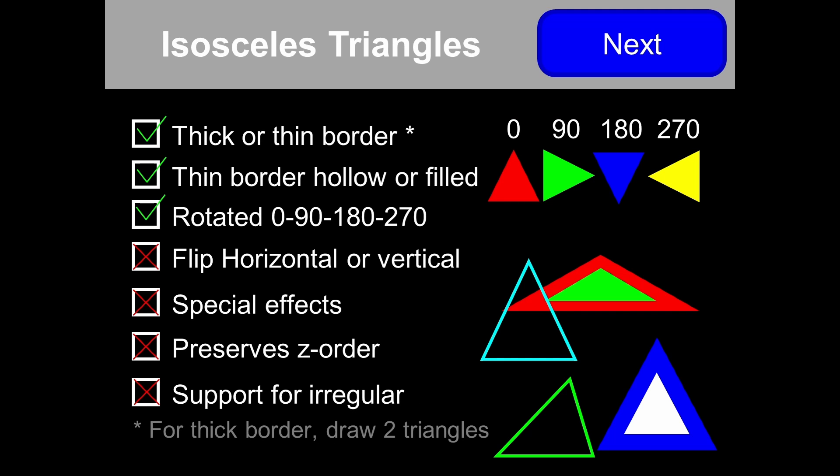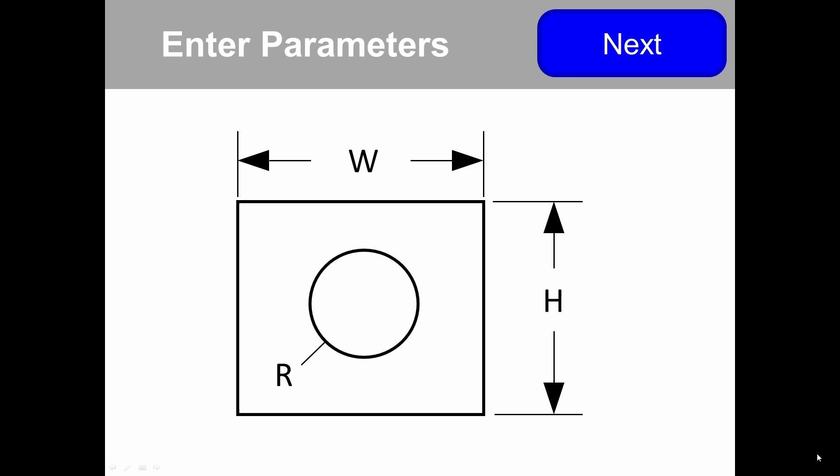We also support isosceles triangles, thick border or thin border, hollow or filled. We don't allow flipping horizontal or vertical, but you can rotate them in increments of 90 degrees. We don't support special effects or irregular triangles. If you want a thick border, draw one triangle on top of the other. A great use case: maybe you have a control where the user enters height, width, or radius of a cutting parameter.